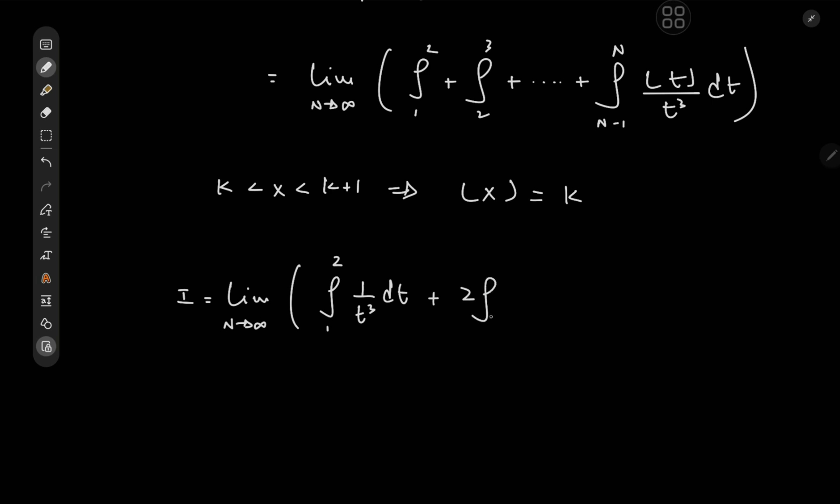Then we have twice the integral from 2 to 3 of 1 over t cubed dt again and so on and so forth until we have n minus 1 times the integral from n minus 1 to n of 1 over t cubed dt.